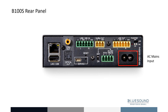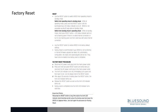The B100S is an AC mains power device and the power cable should be connected here. The factory reset procedure is outlined on this slide, copied from the user guide found on the B100S webpage, and should be used when all other remedies are exhausted. We always suggest a simple reboot — remove power, reapply power — before using this step. Many times a reboot will assist in discovery of the player.